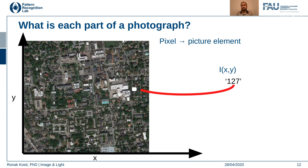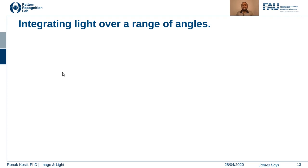Now we have learned how we generate images from real-world continuous physical signals. When we have a photograph — say an aerial satellite view of some area — for every pixel location the value I(x, y) represents the intensity of that pixel at that location. This makes the connection back to what a pixel is and gives us a better understanding of how that value was captured.